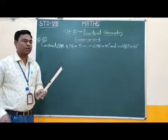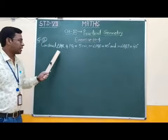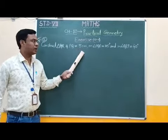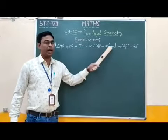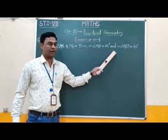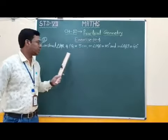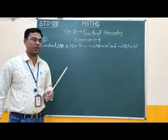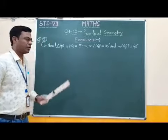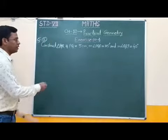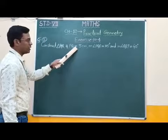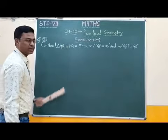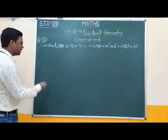Students, in this triangle PQR, the length of one side and measures of two angles are given, and we have to construct this triangle PQR. Here only one side is given, therefore this PQ side we have to take as the base.